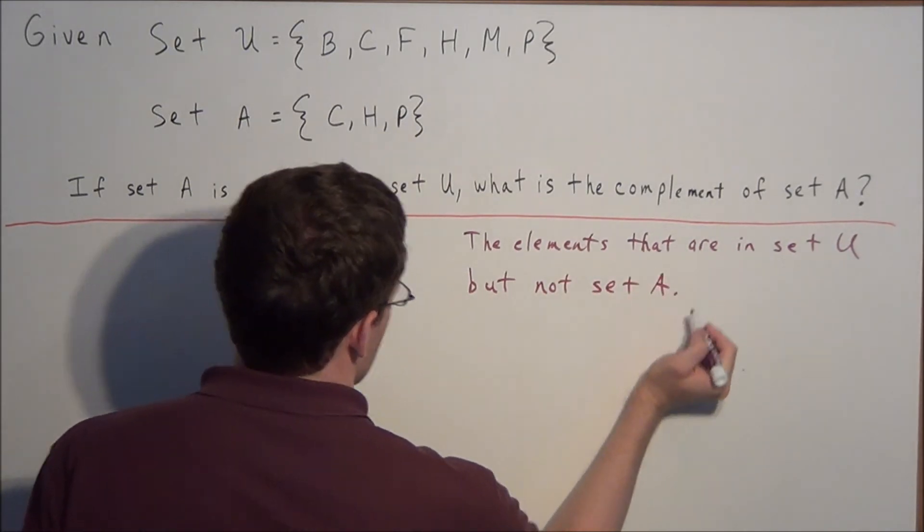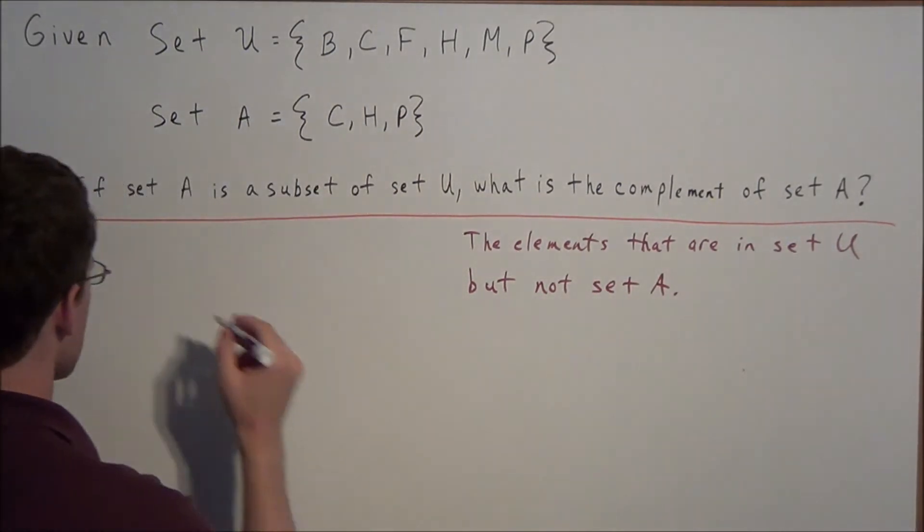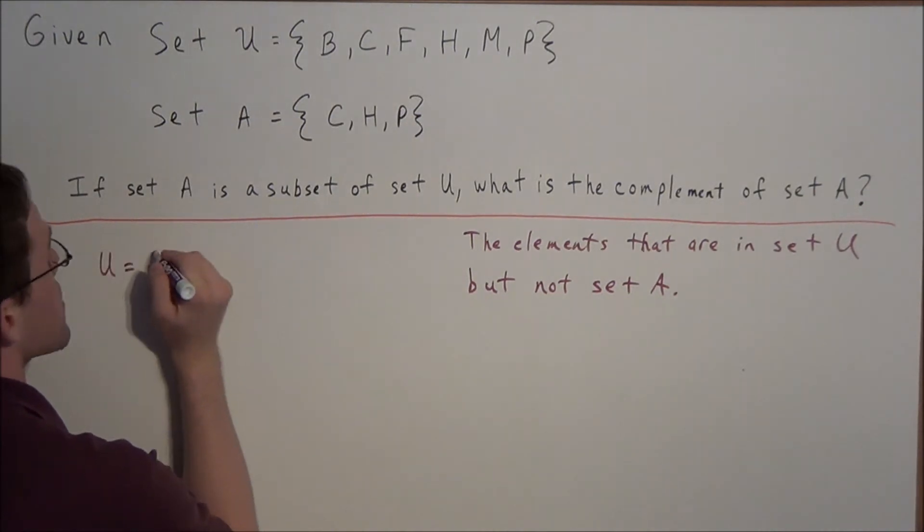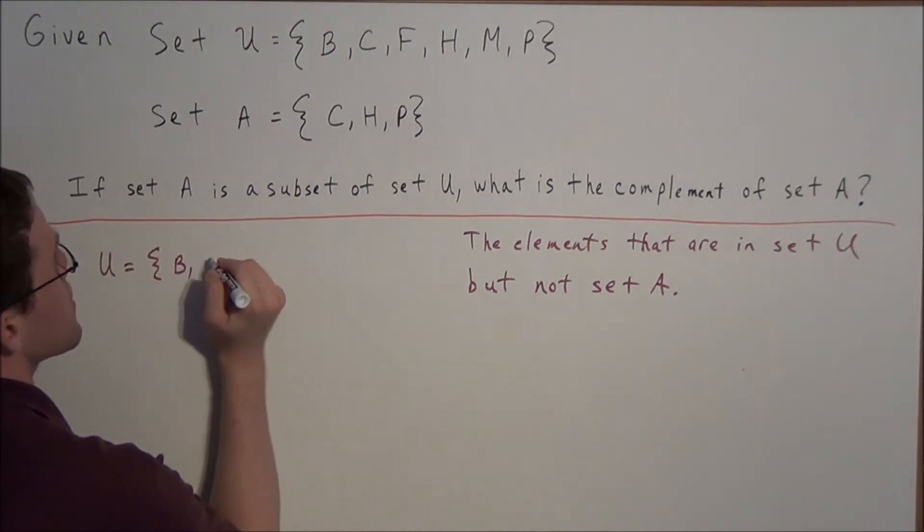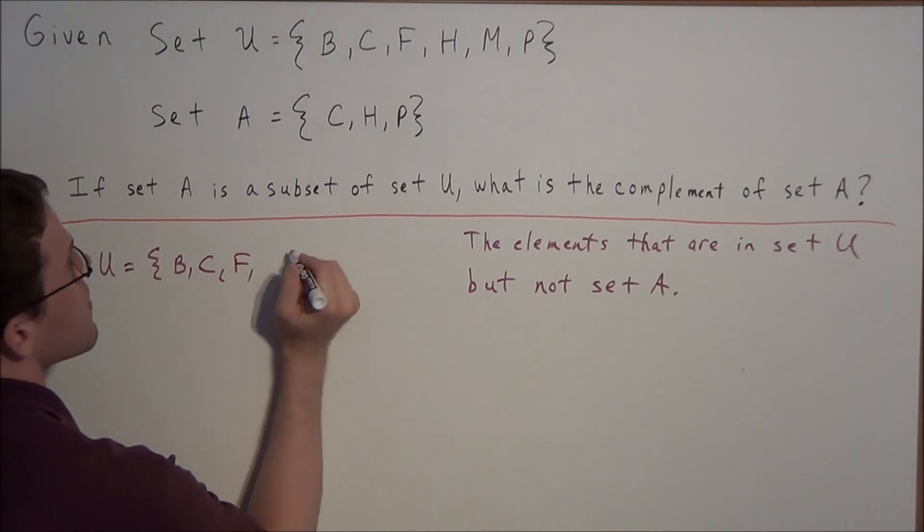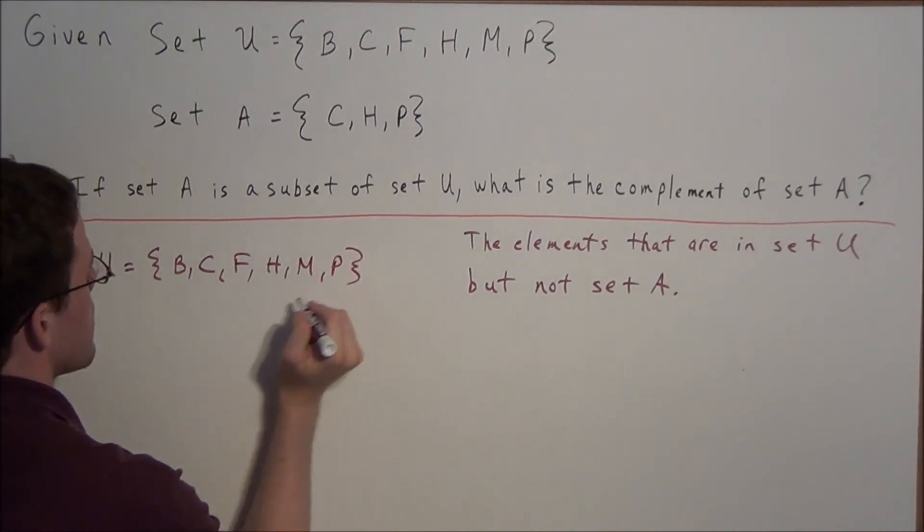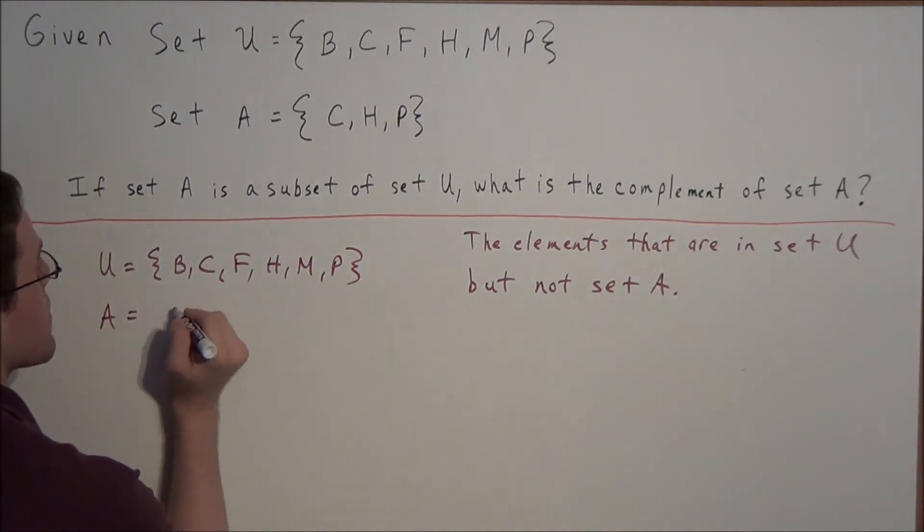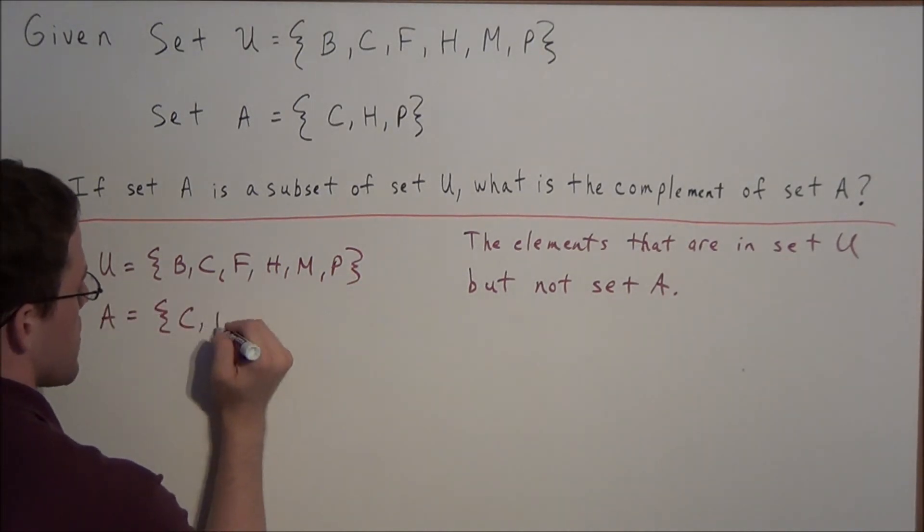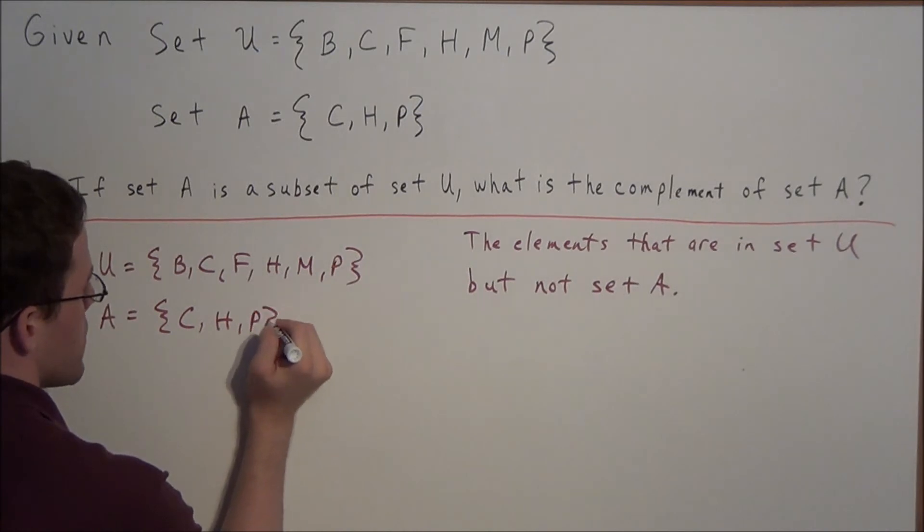So one way I like to answer these problems is I line up the two sets. So we have the set U, and we have B, C, F, H, M, and P. And we have set A, we're looking at C, H, and P.